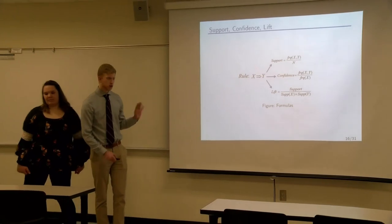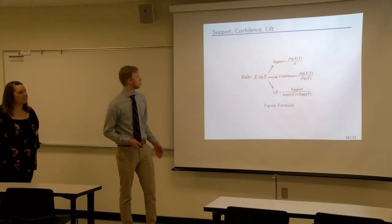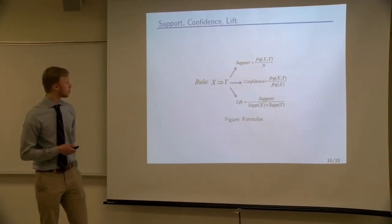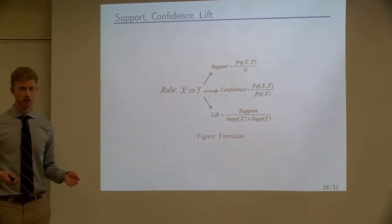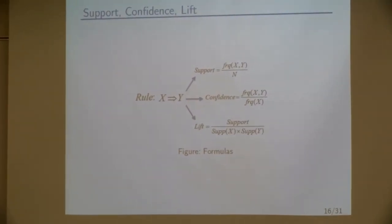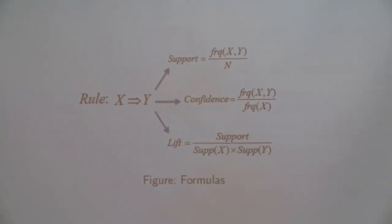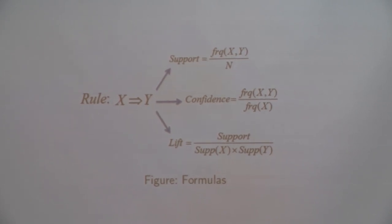So we have those support confidence, and I'll briefly explain what they mean. Support is the frequency of X and Y over the total number of items. So it's more or less a probability that those two items exist in that dataset. Confidence is more of a conditional probability. If you order X, what's the probability that you ordered Y? And then lift is a little bit harder to explain. It's the total probability of the support of both of those, the actual, and then over the support if they were completely independent. So it gets that ratio.